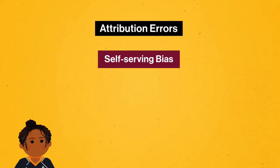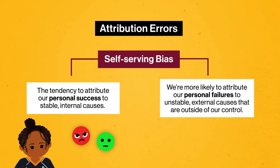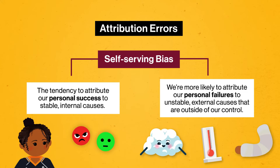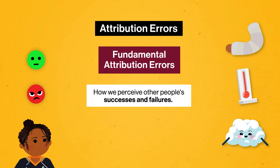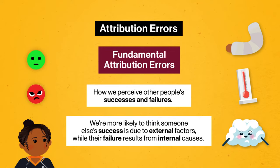Self-serving bias is the tendency to attribute our personal success to stable internal causes like our character or personality, while attributing our personal failures to unstable external causes outside our control, like weather, illness, or injury. The fundamental attribution error has to do with how we perceive other people's successes and failures — we're more likely to think someone else's success is due to external factors, while their failure results from internal causes. In short: our failure isn't our fault, but someone else's failure is theirs.